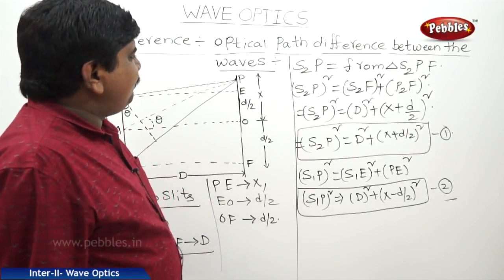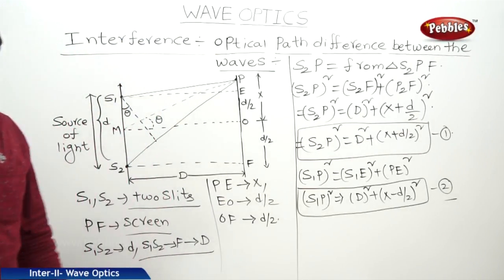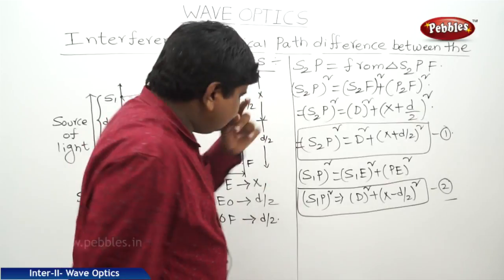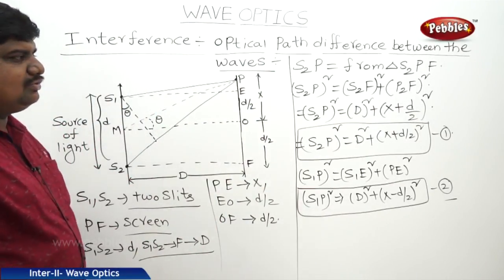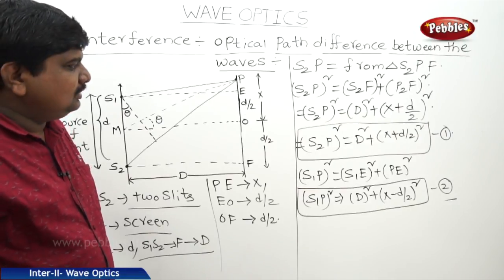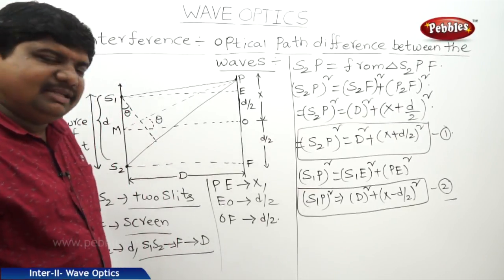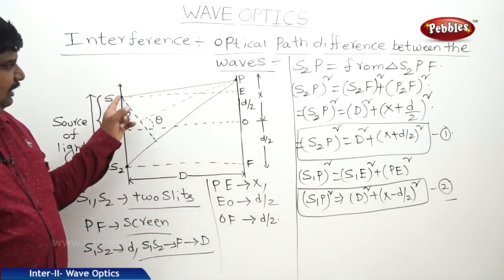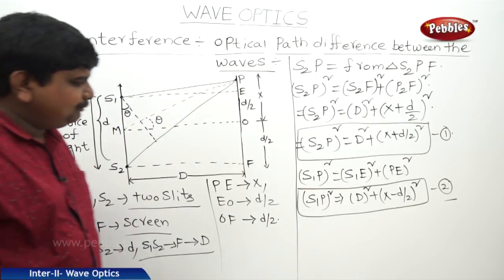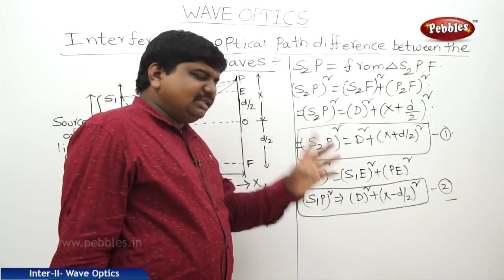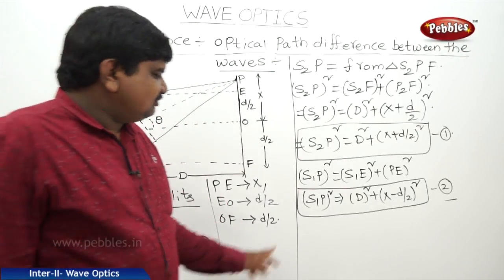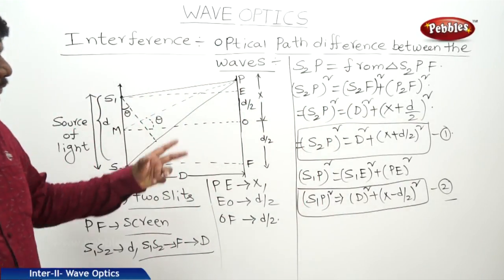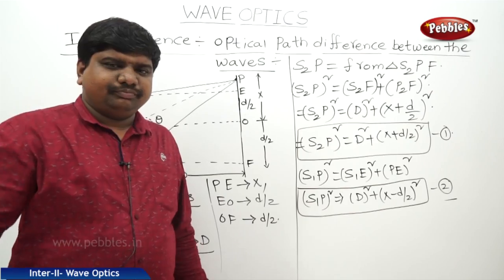So now we have the path difference S2P minus S1P. S2P comes from triangle S2PF, where S2P whole square equals S2F squared plus PF squared, giving D squared plus (x + d/2) whole squared. At the same time, for S1P, triangle S1PF gives S1P whole square equals S1E squared plus PE squared, so S1P whole square equals D squared plus (x − d/2) whole squared. You can now solve these equations for the optical path difference. Thank you.